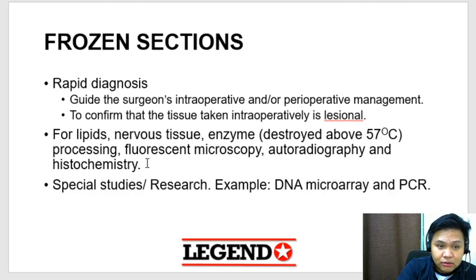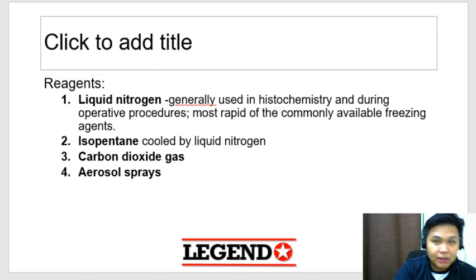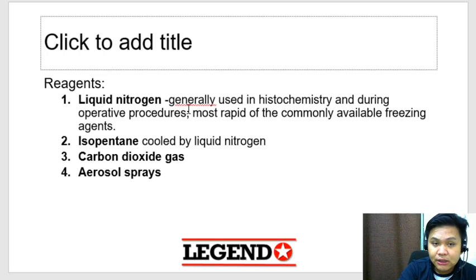You also do frozen sections for lipids, nervous tissue, enzymes, fluorescent microscopy, and special studies. The reagents for frozen sections — you have four. The most commonly used would be liquid nitrogen, which is generally used in histochemistry and during operative procedures. It is the most rapid of the commonly available freezing agents.